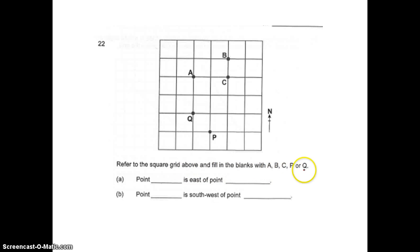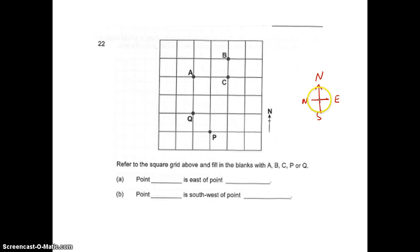Refer to the square grid above and fill in the blanks using points A, B, C, P, or Q. What point is east of which point? I know east - if this is north, this is south, this is east, and this is west. I need to find a point that is in the east direction. I identify A and C, so C is east of A. Point C is east of point A.